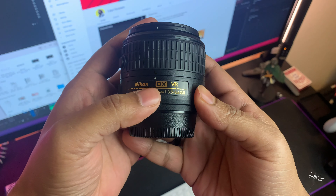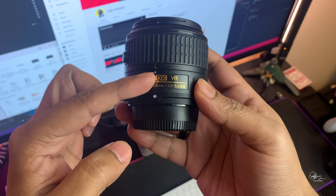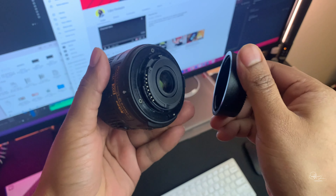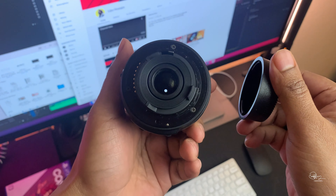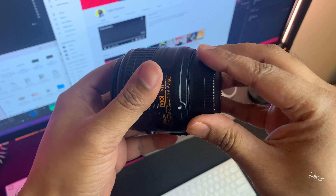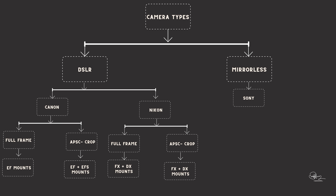Unlike Canon, with Nikon you can use DX lenses — which are basically made for crop sensor camera bodies — on full frame camera bodies as well. That's a benefit of having a Nikon camera. However, you have to set the camera to DX mode on the full frame body to use that lens; it will automatically crop the focal length with the crop factor. So unlike Canon, with Nikon you can use any lens on both the full frame and the APS-C camera body.